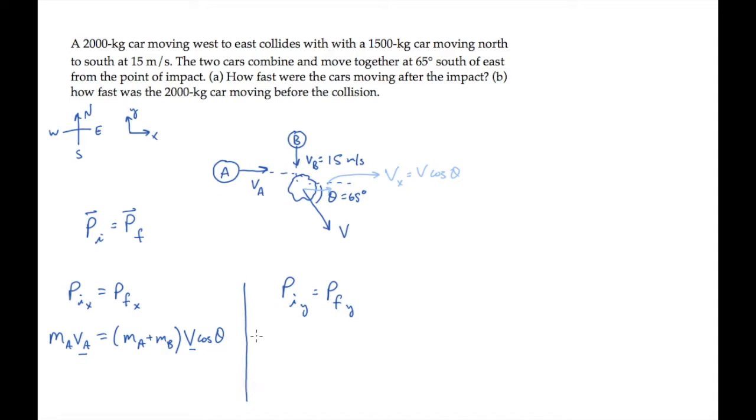Before the collision, the vertical momentum is due to car B, so that's minus m_b v_b. After the collision, the vertical momentum is due to this component of the combined velocity, that's minus v sin theta. So the momentum there is the mass times that velocity component.